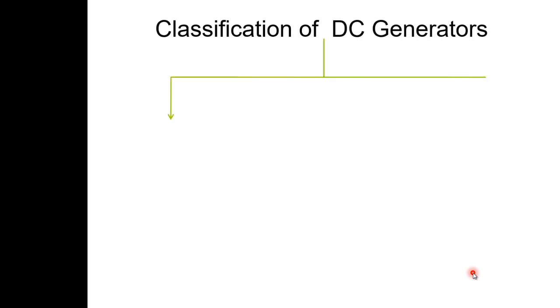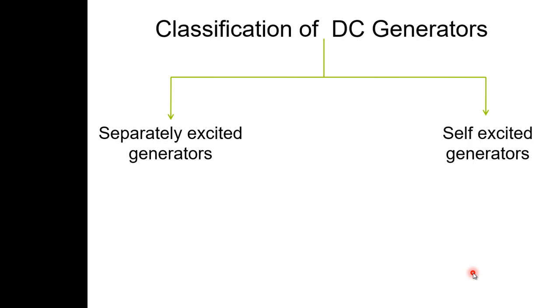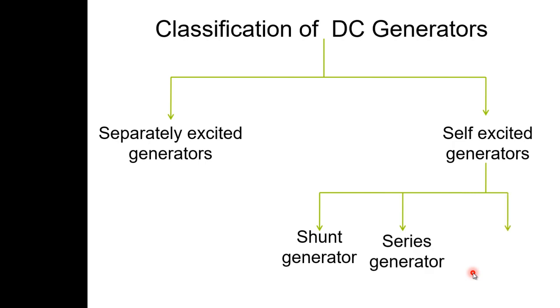We have already seen the classifications of the DC generator; we will review it. According to the excitations, the classifications of the DC generators are: separately excited generator and self-excited generator. In self-excited: shunt type generator, series type generator, and compound type generator. In compound type, there are two types — long shunt and short shunt compound.